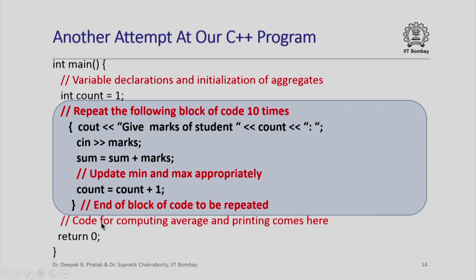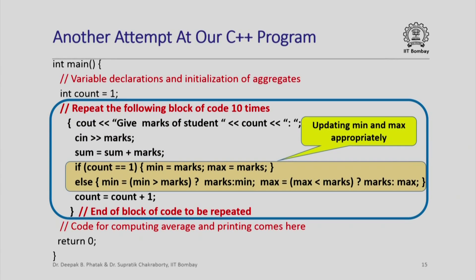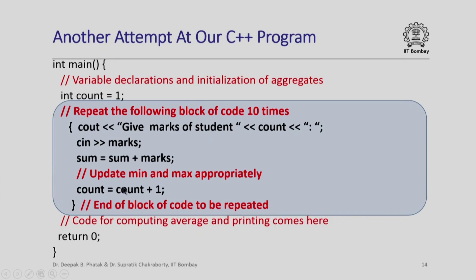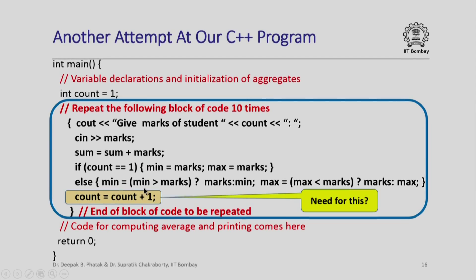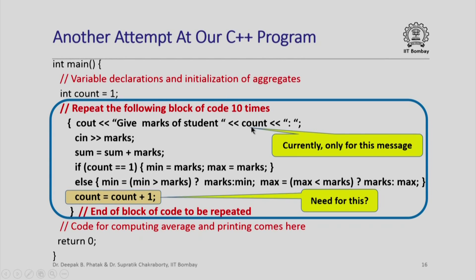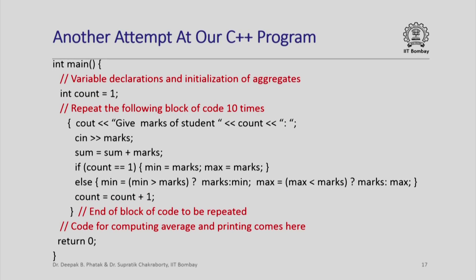We can then compute the average and print the average, sum, min, and max. For updating min and max appropriately: if count equals one, meaning we are reading the first student's marks, we copy the value of marks into min and max directly. Otherwise, we update min and max using the conditional expressions seen earlier. The incrementing of count serves to indicate whether it is student one, two, and so on. If we could actually make this block of code repeat 10 times without writing it out 10 times, this code would be much less repetitive.